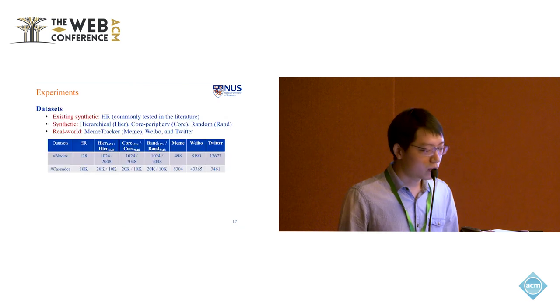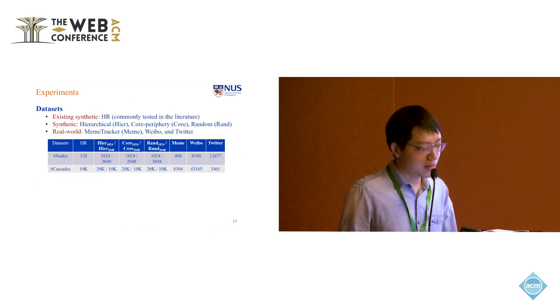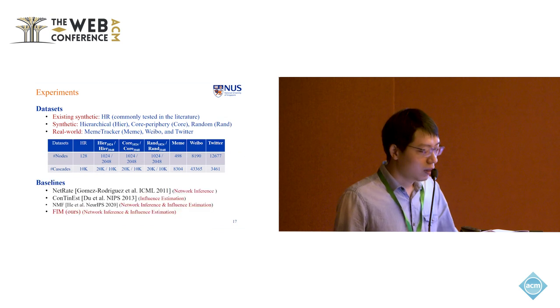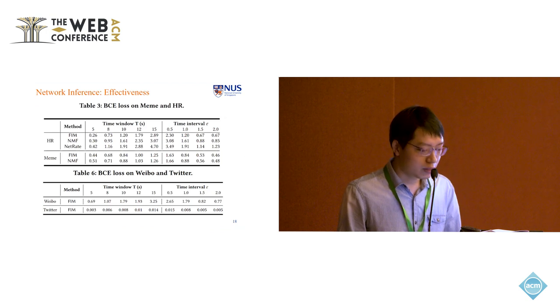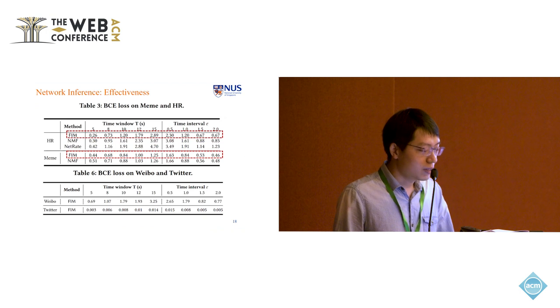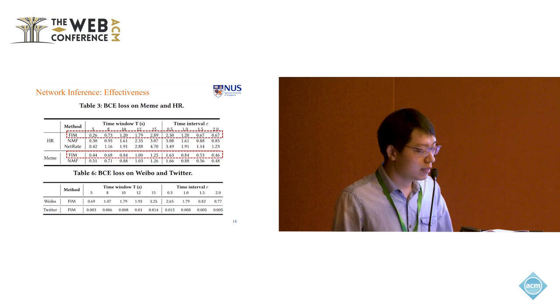Now let's go to experiment parts. Our experiments are done on one existing synthetic set and three synthetic data sets and three real world data sets. Here is the number of nodes and number of cascades. Here the cascade data is what we have only. And for baseline, we compare net rates for network inference and counting AST for influence estimation and NMF for both the experiments. Here I demonstrate the results of network inference. We compare our methods with NMF and net rates for the binary cross entropy loss. We can see that our method can achieve consistently smaller BCE loss than the other two baselines. And also for table six, our method is the only one that can handle the two real world datasets Weibo and Twitter.